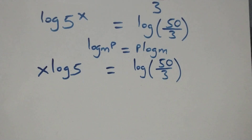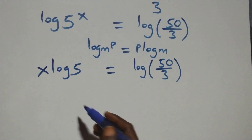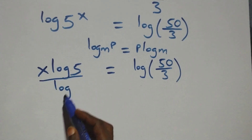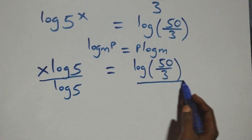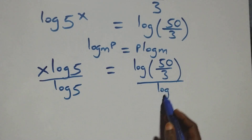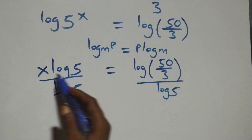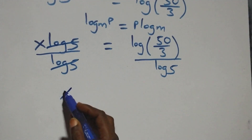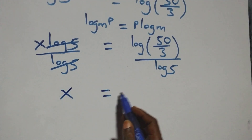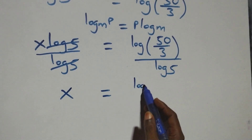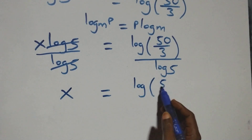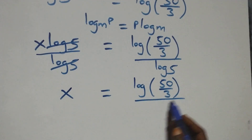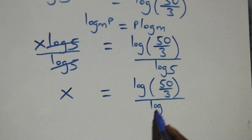The next step: divide both sides by log 5. The log 5's cancel each other, and we have x equals log(50/3) divided by log 5.